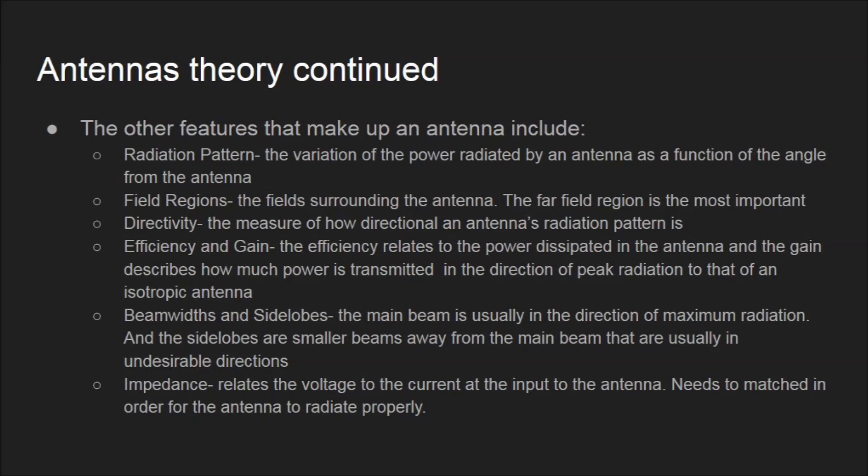The efficiency relates to the power dissipated in the antenna. And the gain describes how much power is being transmitted in the direction of peak radiation. Beam widths are the direction of the maximum radiation, and the side lobes are the smaller beams away from the main beam. Impedance relates the voltage to the current and needs to be matched in order for the antenna to radiate properly.